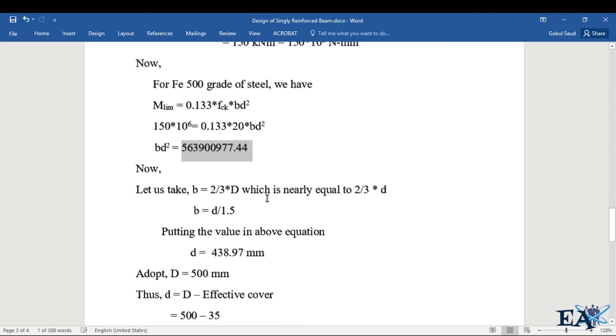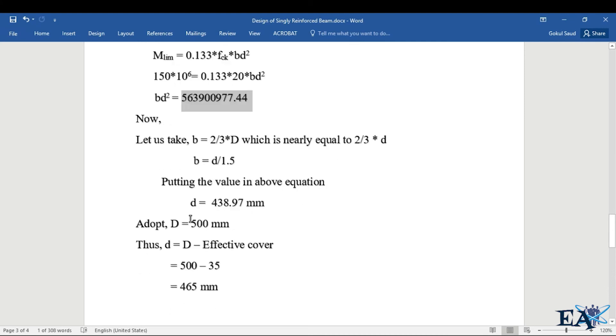Now let us take b = 2/3 times d. Let me tell you that we can vary b from 1/2 to 2/3 times d. That is the thumb rule. So capital D is nearly equal to small d. D is the overall depth of the beam and d is the effective depth. So we get b = d/1.5. If we put the value of b in this equation, we get d as 438.97 mm.